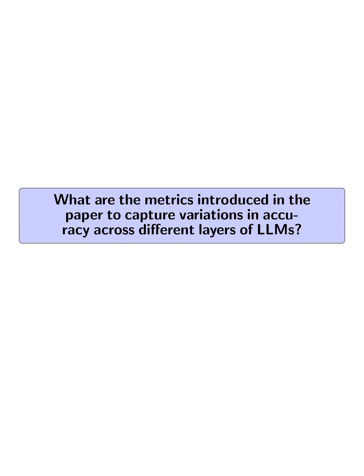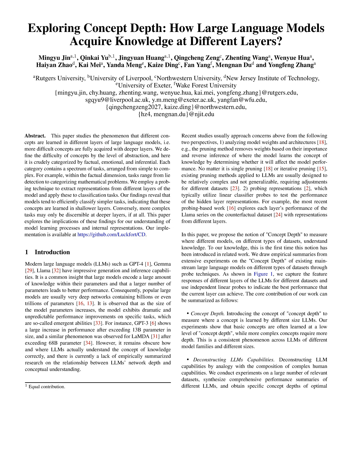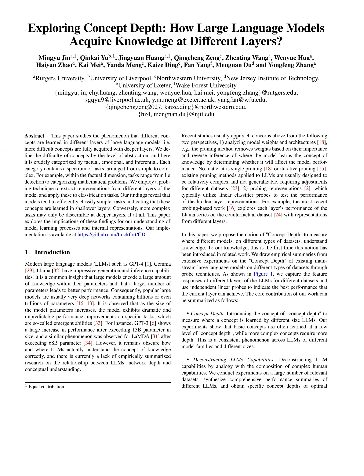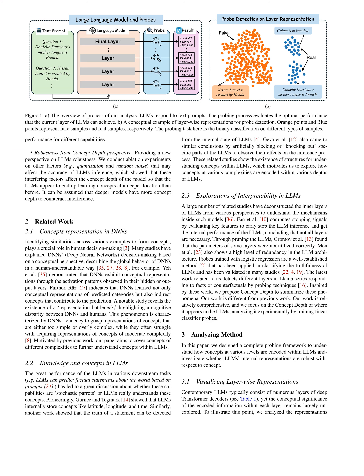What are the metrics introduced in the paper to capture variations in accuracy across different layers of LLMs? The metrics are the variation rate, the jump point, and the converging point. The variation rate is defined as the ratio of accuracy at the i-th layer to the accuracy at the previous layer, denoted as beta_i. The jump point is where accuracy significantly boosts by at least 10% compared to the previous layer. The converging point is where accuracy plateaus or begins to decline, indicating the model's learning saturation or peak learning capacity.